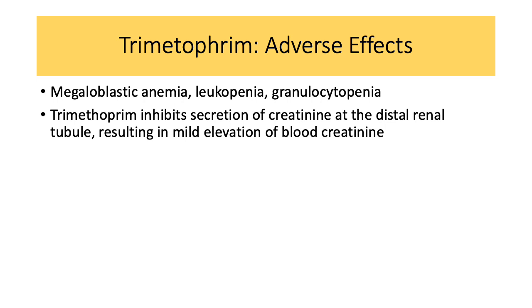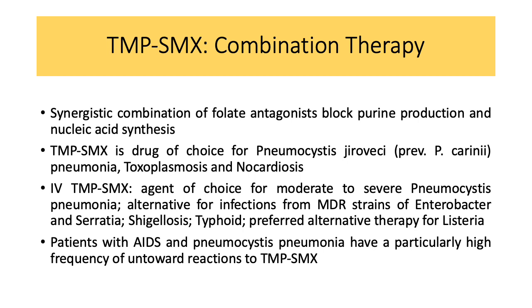Here are some generalities of TMP-SMX combination therapy. The synergistic combination of these folate antagonists blocks purine production and nucleic acid synthesis, making them bactericidal. TMP-SMX is the drug of choice for Pneumocystis jirovecii — previously known as P. carinii pneumonia in AIDS patients — toxoplasmosis, and nocardiosis. IV TMP-SMX is the agent of choice for moderate to severe Pneumocystis pneumonia. It is also an alternative for infections from MDR strains of Enterobacter and Serratia, shigellosis, typhoid, and a preferred alternative therapy for Listeria monocytogenes. Patients with AIDS and Pneumocystis pneumonia have a particularly high frequency of untoward reactions to this drug.